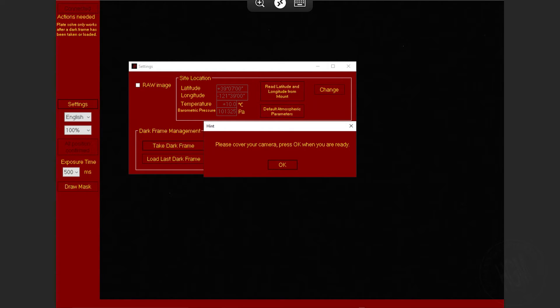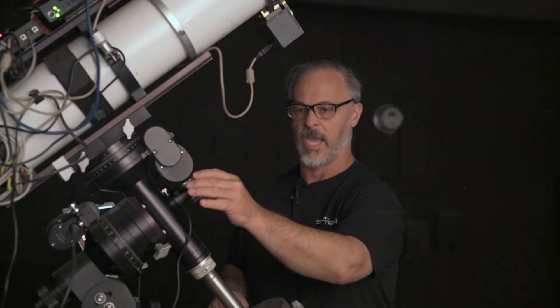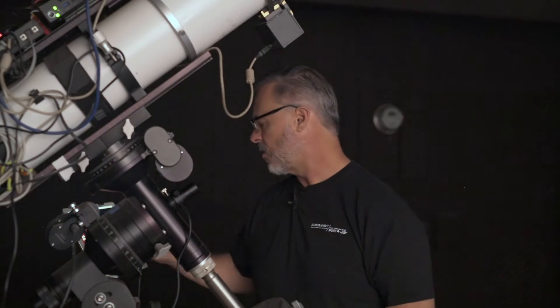And now I'm going to press take a dark frame. It says cover your camera, which I of course already have done. We're going to say OK. And then it says it's taken. So we're going to go ahead and remove that. We're going to say OK.